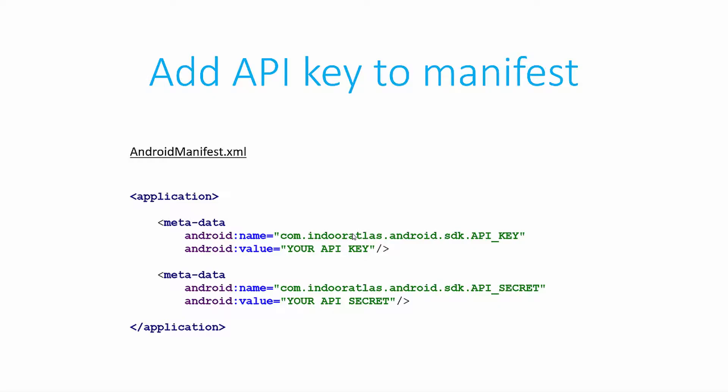Next, you need to add this API key and the API secret to the manifest file of your Android project.